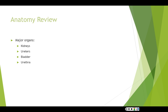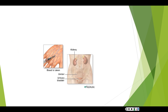Both ureters connect to the left and right side of the bladder, which is positioned right beneath the symphysis pubis. Normal urine output should be about 1500 mls per day, with a bare minimum of 30 cc per hour. Urine output depends on the person's food and fluid intake, and there are also hormonal influences that affect urine output.